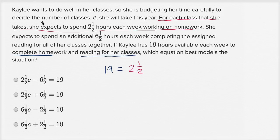Now how many classes is she taking? Well, she's going to take C classes. So the total amount that she spends on homework is going to be 2½ times C. I'll put in parentheses just to make it clear what I'm doing here. So it's going to be 2½ times C is the amount she spends on homework.